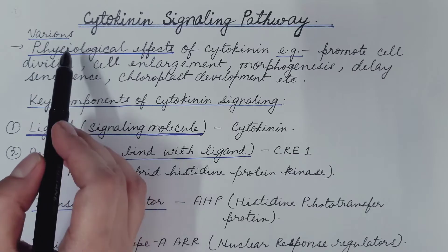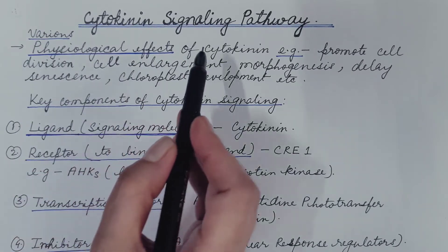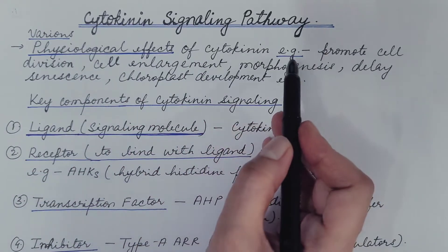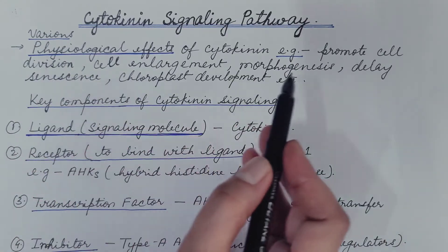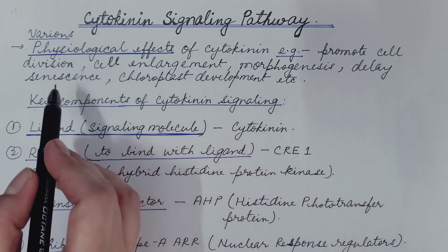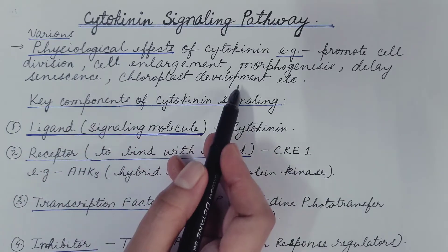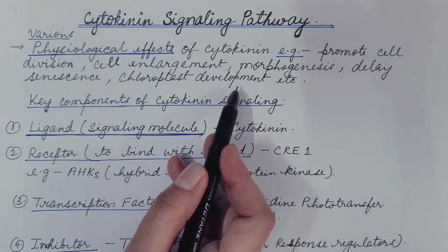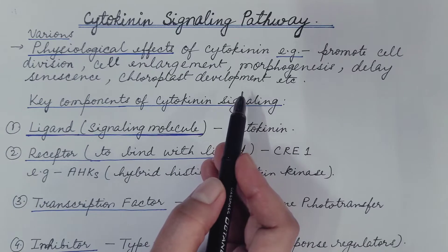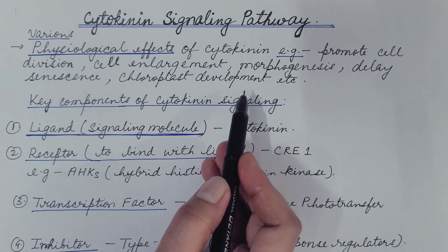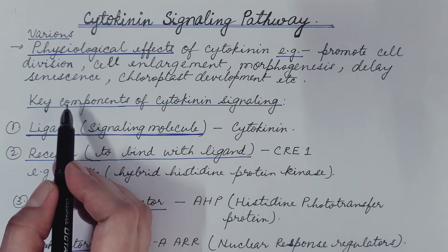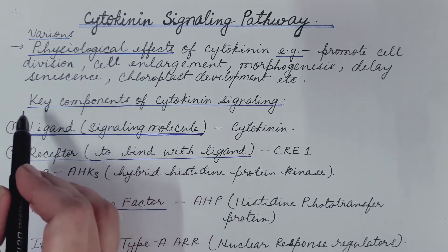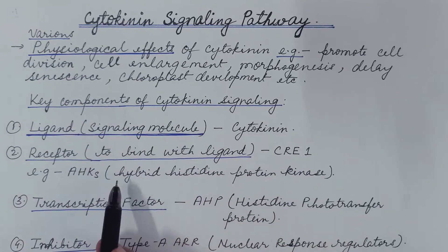We already discussed various physiological effects of cytokinin. For example, it promotes cell division, cell enlargement, morphogenesis, delay of senescence, chloroplast development, and many more. How does cytokinin bring these effects? By the signaling pathway. Every signaling pathway has certain key components. Let us discuss them one by one.